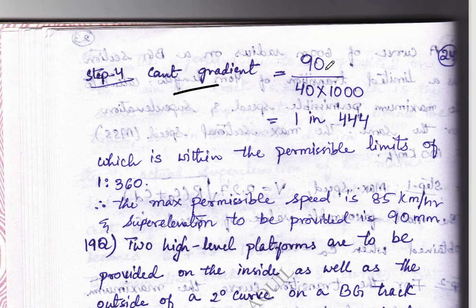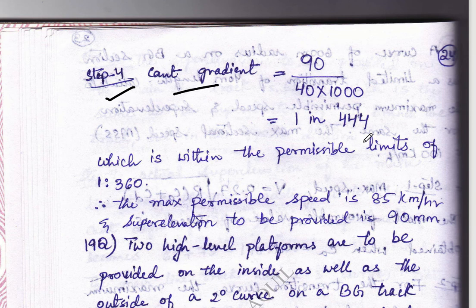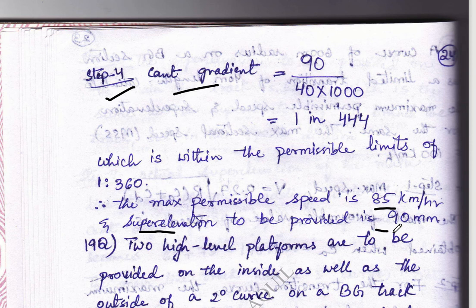The CAD gradient value is 90 by 40 into 1000, where CA is 90, 40 is the length of limited transition, and 1000 is the multiplier. This gives a value which is within the permissible limits of 1 in 360. Therefore the maximum permissible speed is 85 km/h and the super elevation is 90 mm.